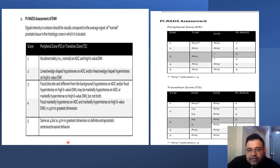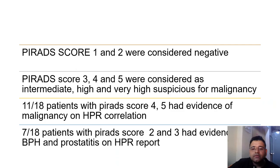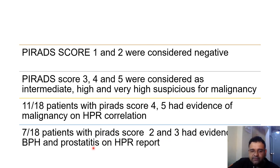After categorizing lesions in the peripheral zone and transitional zone, we compile the data to assign the PI-RADS category. For example, if a category 3 is assigned and dynamic contrast enhancement is positive, the lesion is further reclassified as PI-RADS 4. If dynamic contrast is negative, the lesion remains PI-RADS 3 of intermediate risk. In this study, PI-RADS scores 1 and 2 were considered negative, while scores 3, 4, and 5 were considered intermediate, high, and very high suspicion for malignancy. Out of 18 patients, 11 with PI-RADS score 4 and 5 had malignancy on HPR correlation, and 7 out of 8 with scores 2 and 3 had BPH or prostatitis.